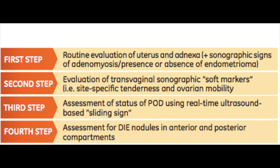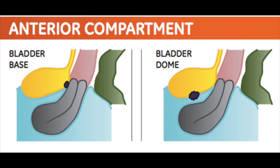The second step is evaluation of the transvaginal sonographic soft markers — that is, site-specific tenderness and ovarian mobility. The third is evaluating the status of the pouch of Douglas using the sliding sign, and lastly assessing DIE nodules in both the anterior and posterior compartment. The anterior compartment consists of lesions at the bladder base or the bladder dome, so we need to evaluate these areas as well.